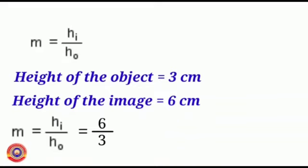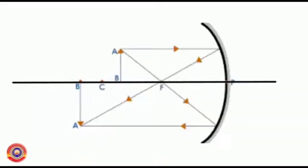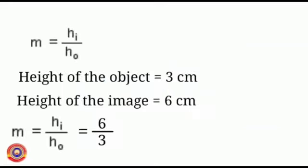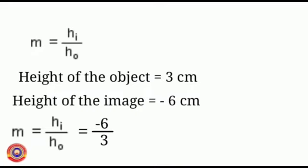While calculating magnification, those measurements which are taken downwards are considered as negative. We know if the image is real, it is inverted. So we have to give the height of the image as negative 6. Magnification M equals negative 6 divided by 3, that is equal to negative 2.